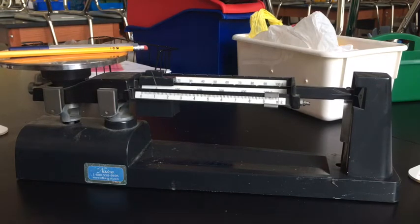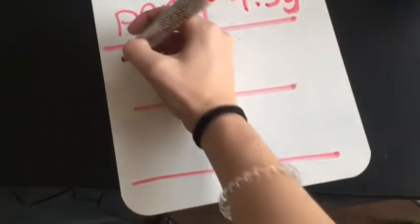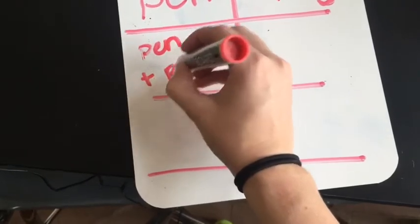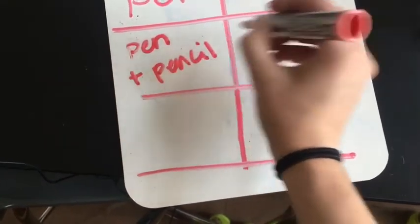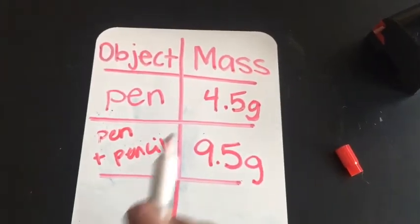All right, and that seems to be really close, so let's put 9.5. I'm gonna set this back to 0. And then we have a pen and a pencil on here, so we're gonna write 'pen and pencil,' plus pencil. And this is 9.5, and remember we want to put grams - 9.5 grams. So you should have this in your notebook.